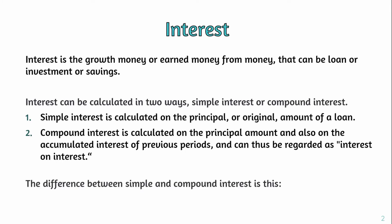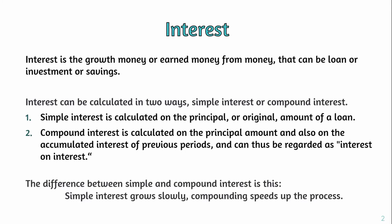So the difference between simple and compound interest is this: simple interest grows slowly, while compounding speeds up the process. Simple interest has a slow growth rate, but compound interest has a faster, accelerating growth rate.